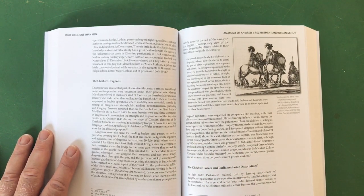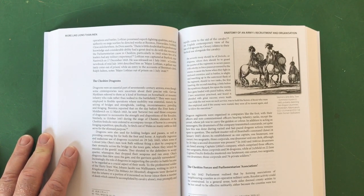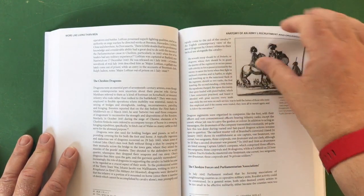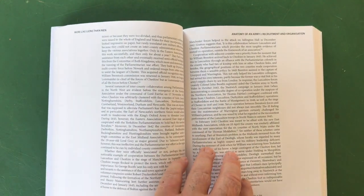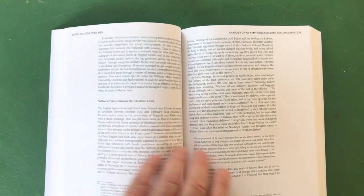As they say, dragoons were an essential part of 17th century armies even though some contemporaries were uncertain about their precise role. Gervase Markham referred to them as a kind of footman on horseback or mounted infantry who rode rather than walk to the battlefield, mainly employed in flexible operations where mobility was essential, naming the seizing of bridges and strongholds, raiding, reconnaissance, patrolling and foraging, and so it goes.